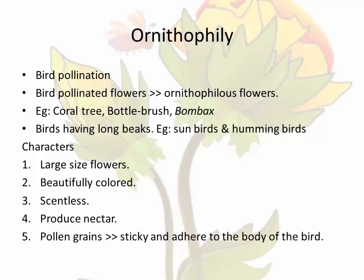Ornithophily: Pollination by the agency of birds is called ornithophily or bird pollination. The bird-pollinated flowers are called ornithophilous flowers. Examples include coral tree, bottle brush, and Bombax. The pollinating birds always have long beaks almost equal to the length of the corolla tube, for example sunbirds and hummingbirds. The characteristics of ornithophilous flowers are that they are very large in size and beautifully colored. They are scentless, they produce nectar, and the pollen grains are very sticky and adhere to the body of the bird.